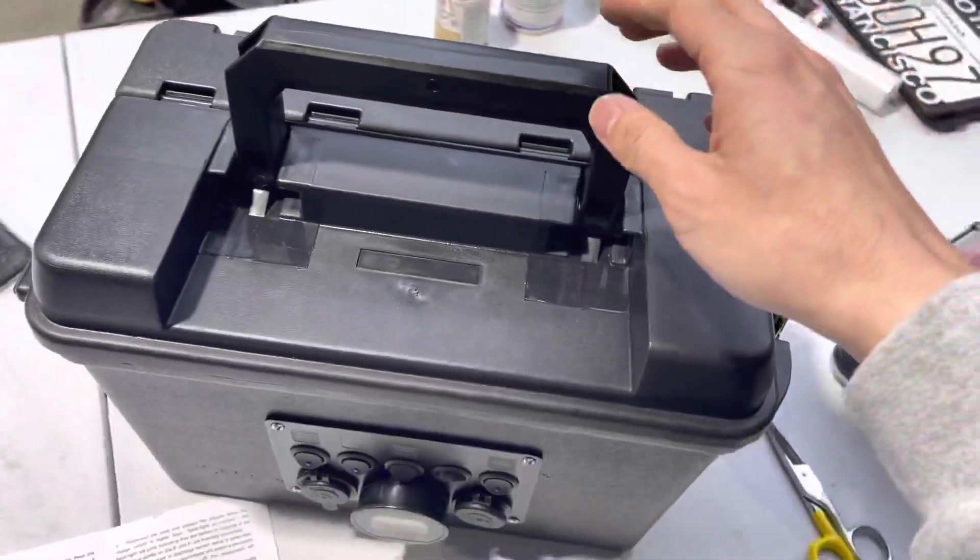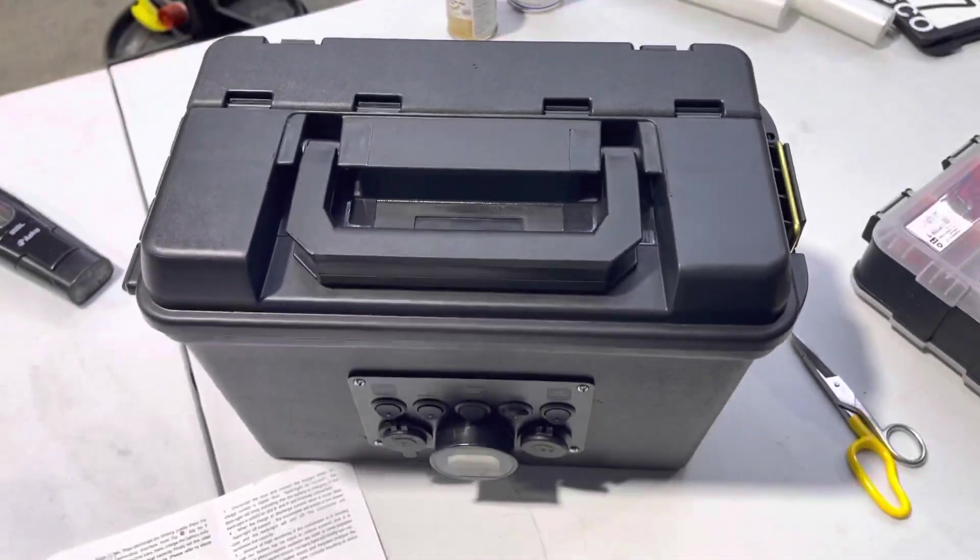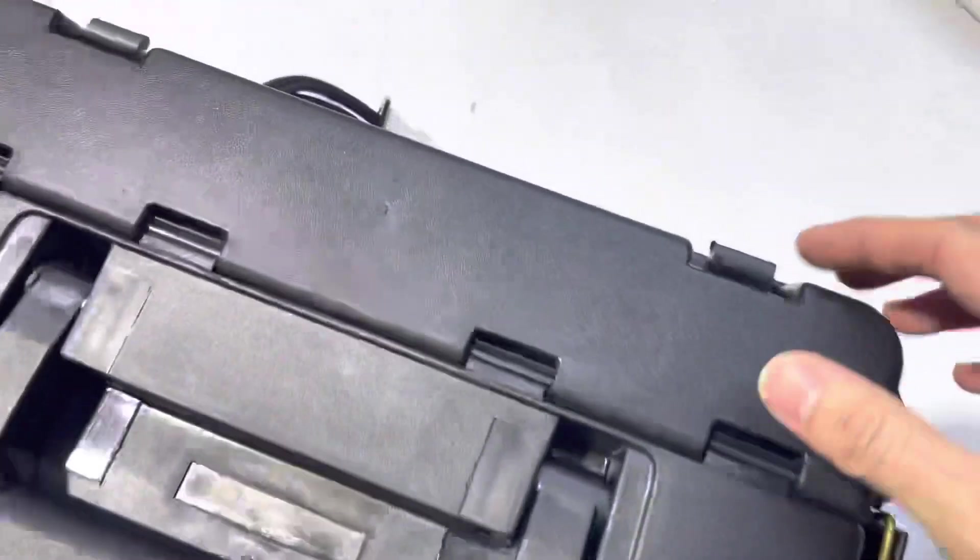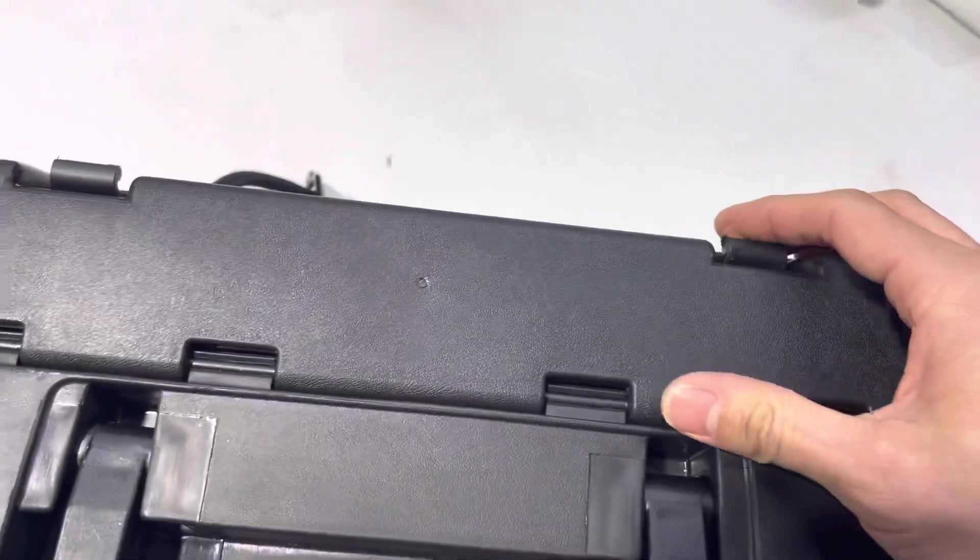If you were to get a similar AGM battery probably 50, 60 pounds. It's kind of nice because there's a compartment up top, there's one hand.